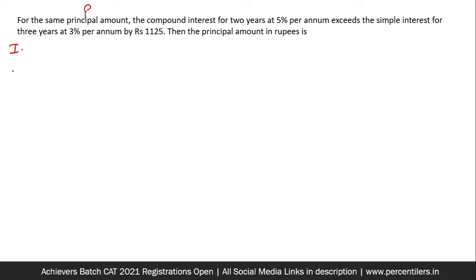So compound interest for two years would be equal to P into 1.05 squared minus P because this is for amount and if you subtract the principal, that becomes compound interest. Simple interest for three years at 3% would be 0.09P. That is 9% of principal. 3% per annum for three years is 9% of principal.